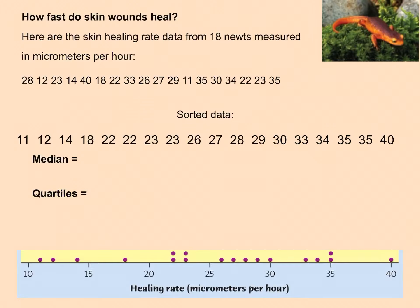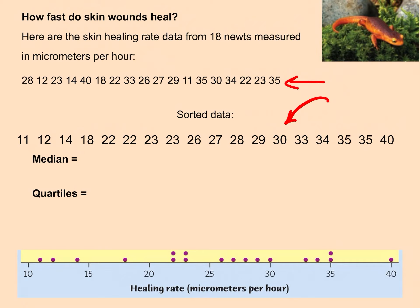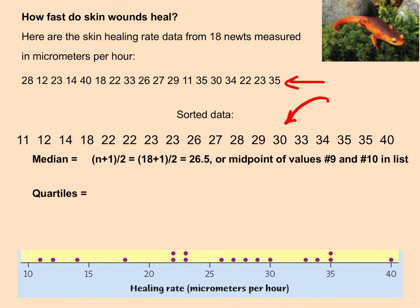Here we have laboratory data on how fast skin wounds in newts heal — skin healing rate data for 18 newts measured in micrometers per hour. First, sort the data from low to high. To find the median with n = 18: (18 + 1) / 2 = 9.5, which falls between data points 9 and 10. So our median is the average of those two values.